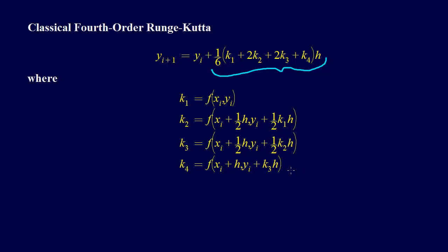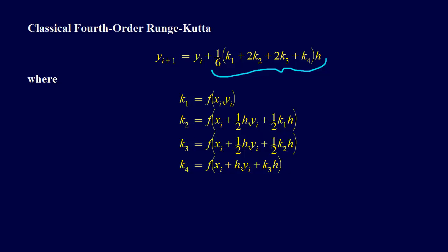You can compare this to Heun's method where we had one that was just starting and then the other one that was all the way there. We put those two together to get our new estimate phi. Here, we do the same thing.